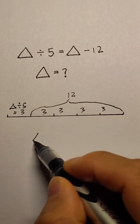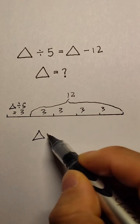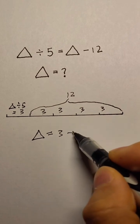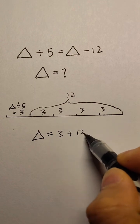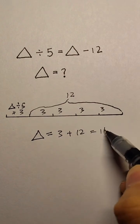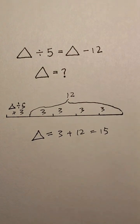So triangle equals 3 plus 12, which equals 15. That's the value of triangle.